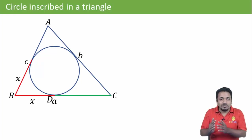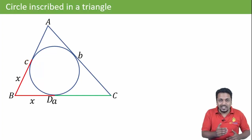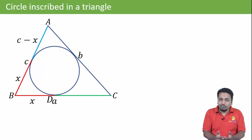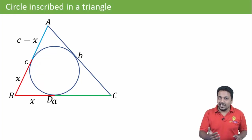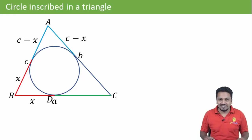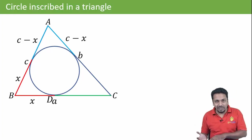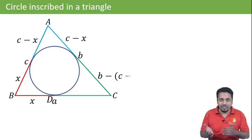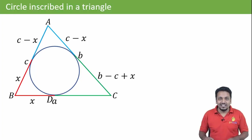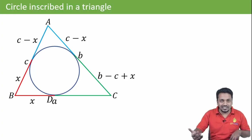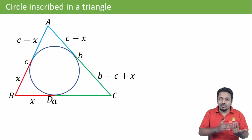So the length of the other tangent will also be x. But AB's total length is c, so the remaining part will be c minus x. Now take point A: the length of one tangent from A is c minus x, so the length of the other tangent from A will also be c minus x. Now AC's total length is b. If one part is c minus x, then the remaining part will be b minus (c minus x), that is b minus c plus x. Now focus on point C: if the length of one tangent from C is b minus c plus x, then the other will also be b minus c plus x.